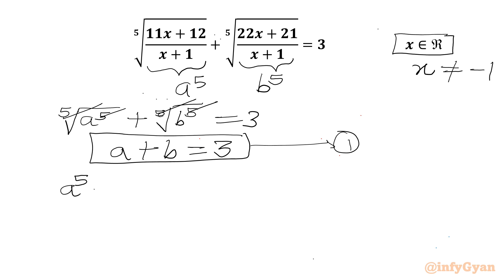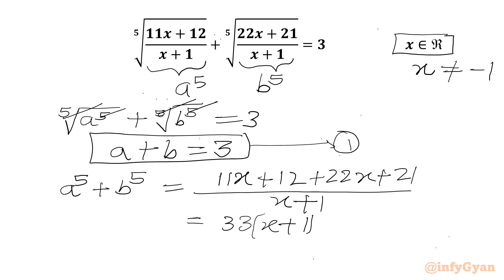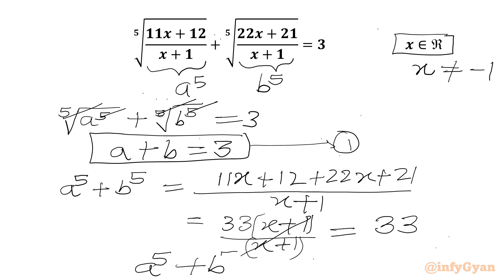Now I will add a⁵ and b⁵. The denominator is the same, x plus 1, so we can add the numerator terms: 11x plus 12, plus 22x plus 21. This gives us 33 times (x plus 1) over (x plus 1). So x plus 1 cancels, and a⁵ plus b⁵ equals 33. This is equation number 2.